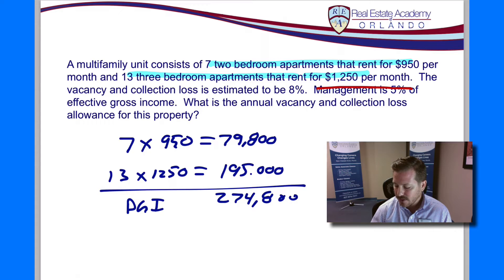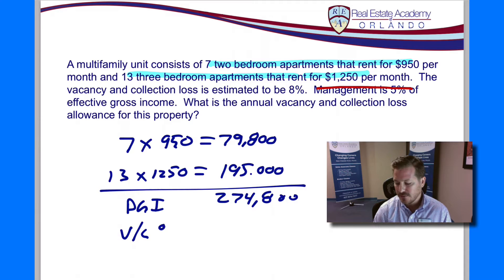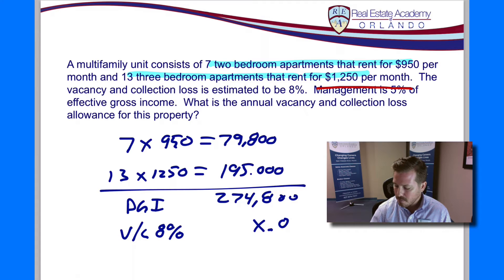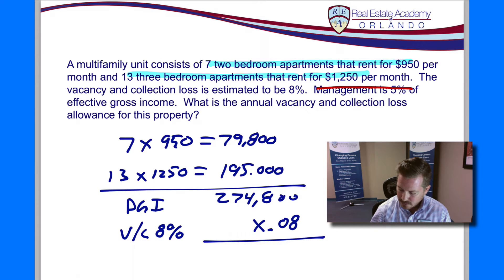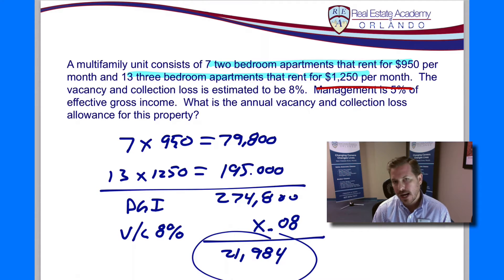So now we've got that. We know next that our vacancy and collection loss is going to be 8% of that PGI. So take our $274,800, we're going to multiply that by 0.08, or 8%. And that's going to give us an answer of $21,984. And that is going to be our answer.